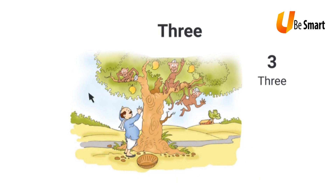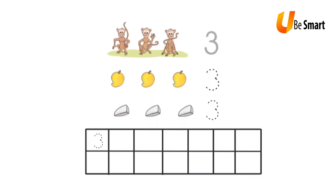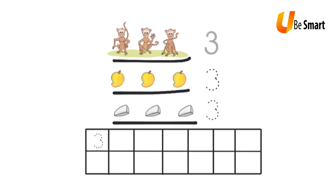In this picture, I am going to find the things that are 3 in number. I see one, two, and three monkeys. One, two, and three mangoes. I also see one, two, and three caps. So there are three monkeys, three mangoes, and three caps. I write the number 3 along these dotted lines like this.